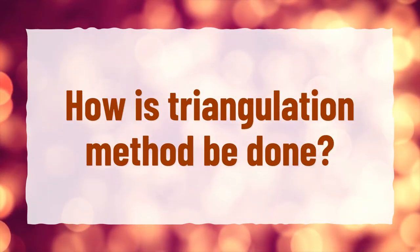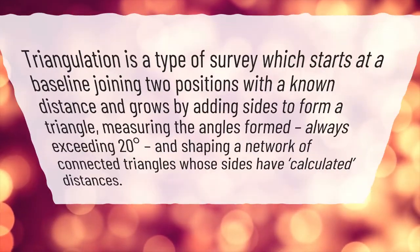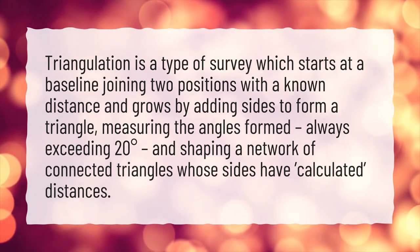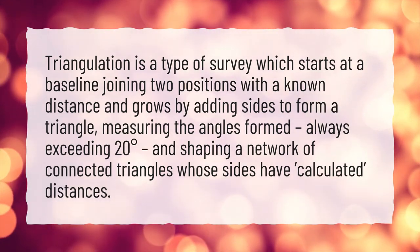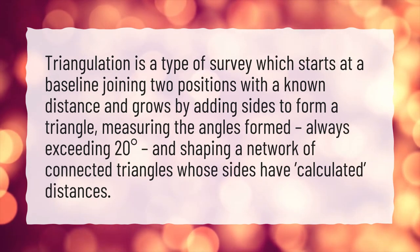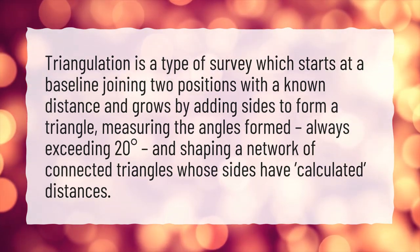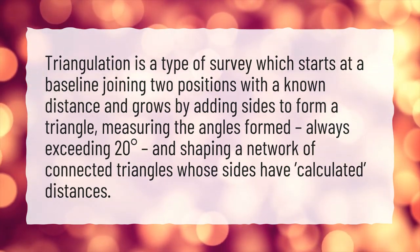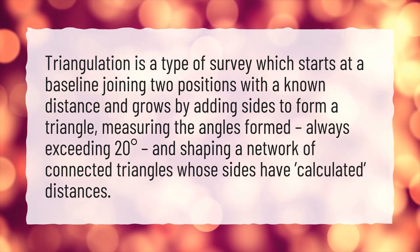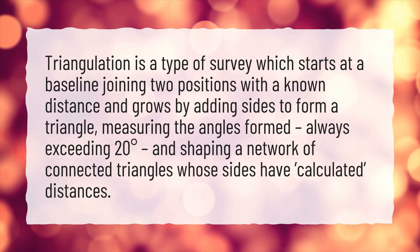How has the triangulation method been done? Triangulation is a type of survey which starts at a baseline joining two positions with a known distance and grows by adding sides to form a triangle, measuring the angles formed, always exceeding 20 degrees, and shaping a network of connected triangles whose sides have calculated distances.